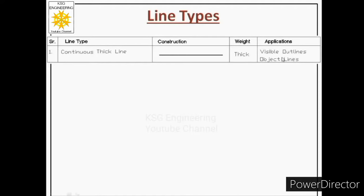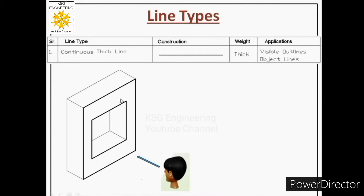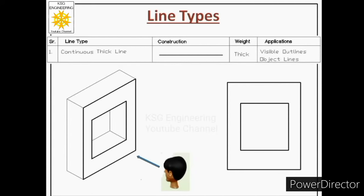This line is used to represent visible outlines of the object, and we call it an object line. For example, to draw the front view of an object, only the face visible from the front is considered — represented by visible edges. These visible edges are drawn with continuous thick lines. Every edge or surface that is visible must be represented by continuous thick lines in the drawing.